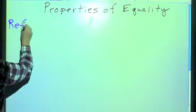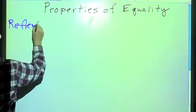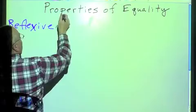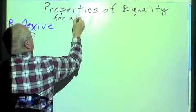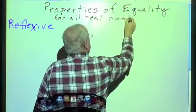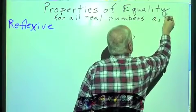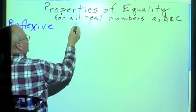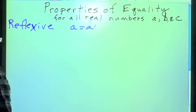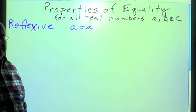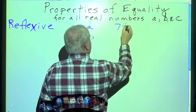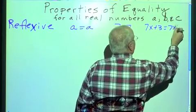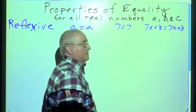First one is reflexive. Reflexive property simply says that something is equal to itself. Now, all of these properties are for all real numbers represented by A, B, and C. And this basically reflexive says A equals A. A number, a variable is equal to itself. Let's translate that into a number. It simply says 7 equals 7, or into a little equation, 7x plus 3 equals 7x plus 3. Something is always equal to itself.